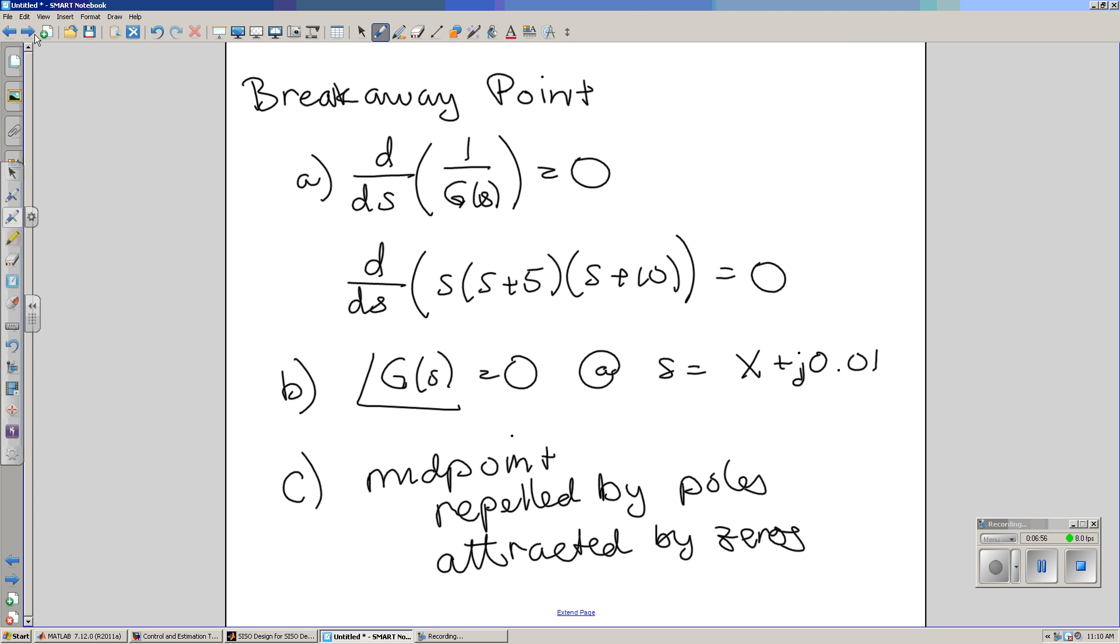To find the breakaway point, a couple ways. First, the breakaway point is the point at which the sensitivity of g(s), whenever g(s) is zero, sensitivity to g(s) is infinity. That's the hard way. A numerical solution is the point just above the real axis where the angle is at up to 180 degrees. This is actually 180 degrees. Or, roughly,